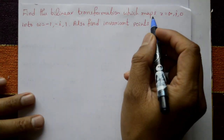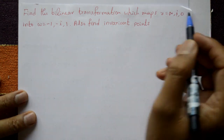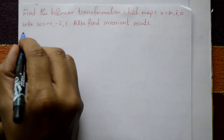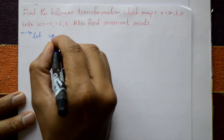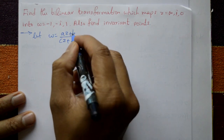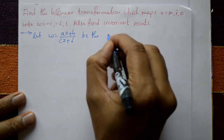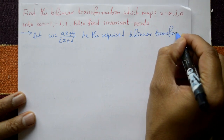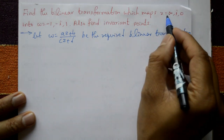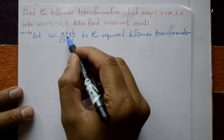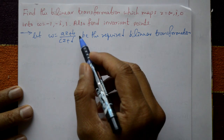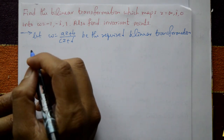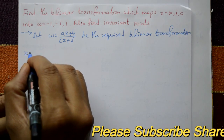Find the bilinear transformation which maps z equal to infinity, i, 0 into w equal to minus 1, minus i, 1. Also find invariant points. Solution: let w equal to (az + b) / (cz + d) be the required bilinear transformation. We will substitute the given z and w values into this equation to find a, b, c, d.